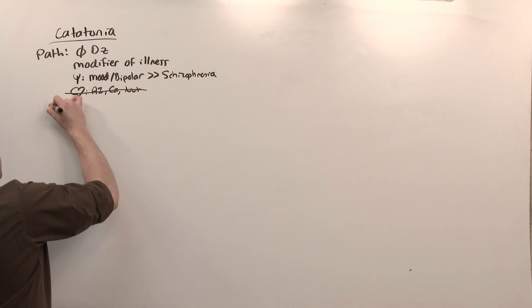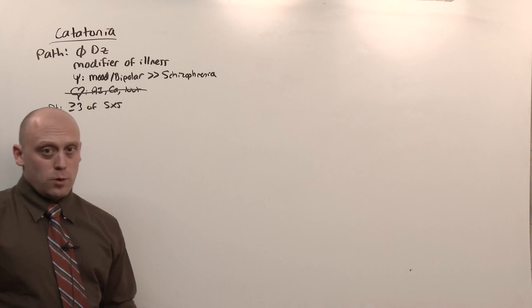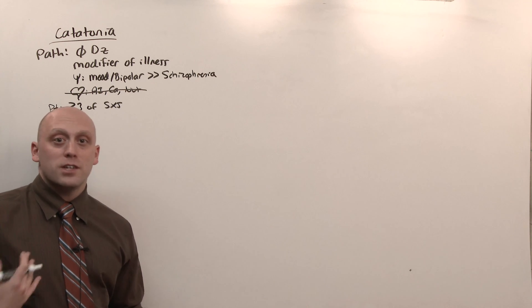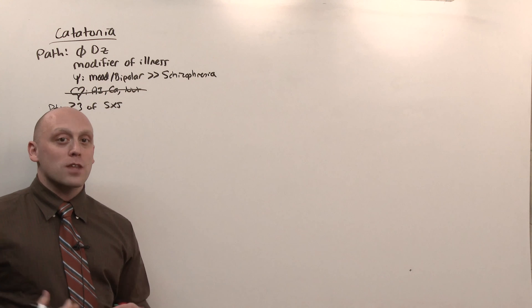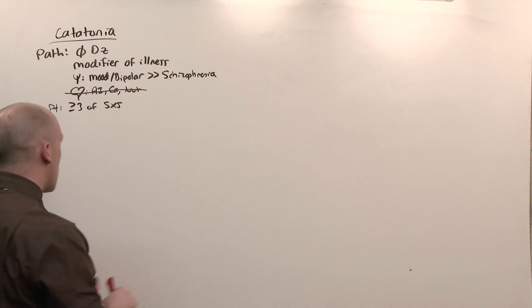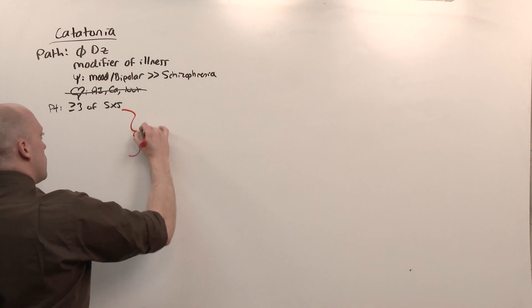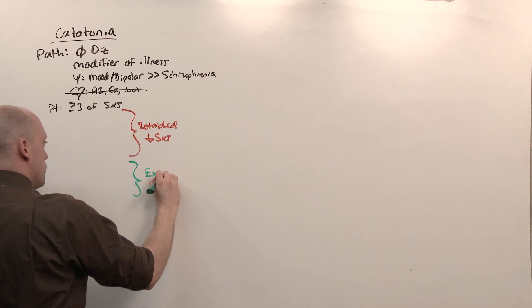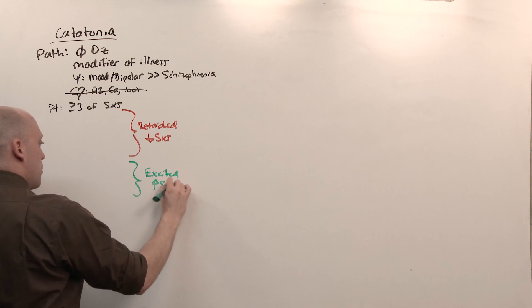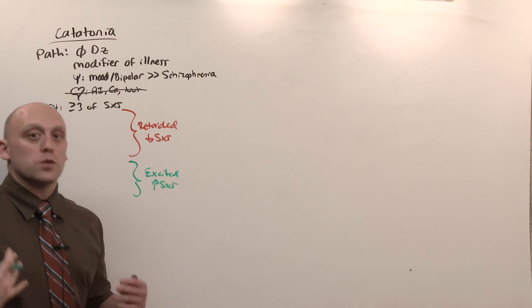Let's define catatonia. It is defined by having three or more of the following symptoms. Now, of course, there can be crossover between these two disease states, but I find it very easy to separate retarded catatonia from excited catatonia and think of them as two completely separate disorders. I'm going to color code them that way. Retarded catatonia is sort of the decreased movement symptoms. They move less, they do less. Excited catatonia is where everything is going more. They are more active. They're doing things, they're saying things, and they're doing more than they're supposed to.